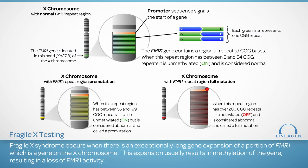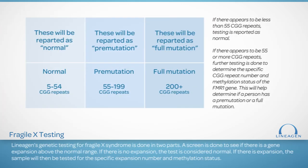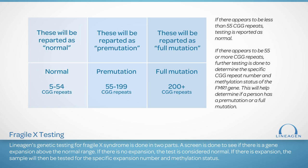Fragile X syndrome occurs when there is an exceptionally long expansion of a portion of FMR1, which is a gene on the X chromosome. This expansion generally causes the gene to be methylated, or turned off, which causes the condition. The pictures shown here illustrate what a normal FMR1 gene should look like, and also show what happens when the region is expanded into a pre-mutation and into a full mutation. Lineagen's genetic testing for Fragile X syndrome is done in two parts. A screen is performed to see if there is a gene expansion above the normal range of 5 to 54 CGG repeats or triplets — each letter representing one nucleotide or base. If there is no expansion, the test is considered normal. If there is expansion, the sample will then be tested for the specific repeat number and methylation status.